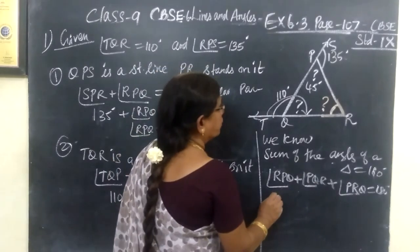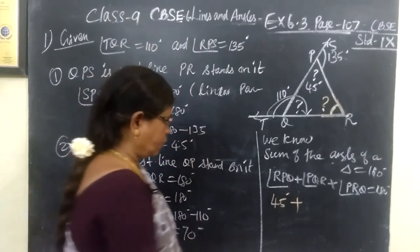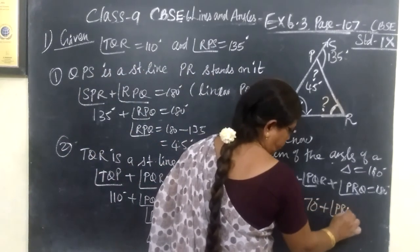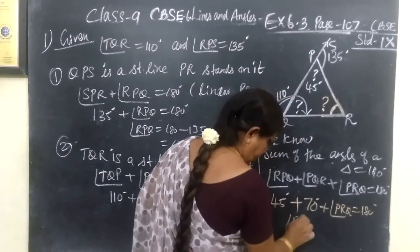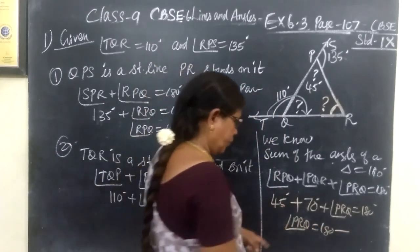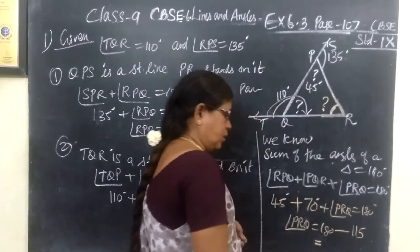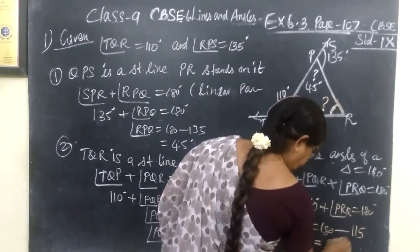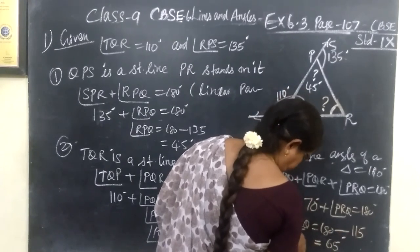This answer is 45, then plus here 70. So 70 plus PRQ equal to 180 degrees. Therefore, PRQ equal to 180 minus the sum of these two, which is 115. If you subtract, you are getting 65 degrees.